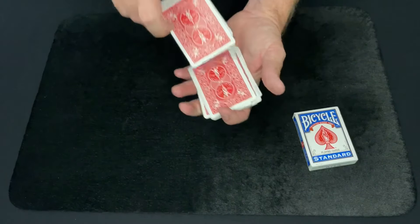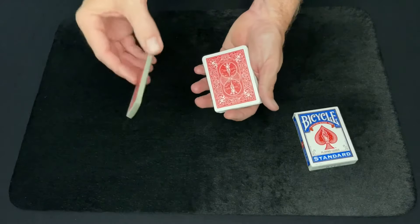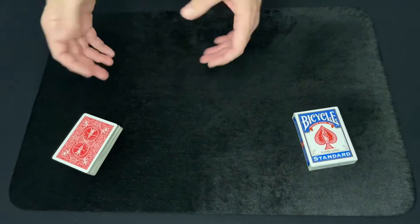So I'm going to have a spectator select a card by just telling me when to stop as I go through the deck like this. And let's say they stop me right there, they can look at that card, remember it. I'm going to lose it back in this deck right here.